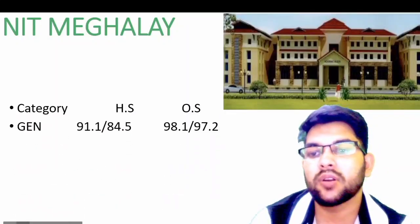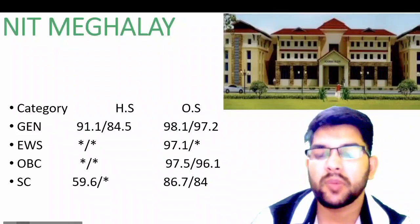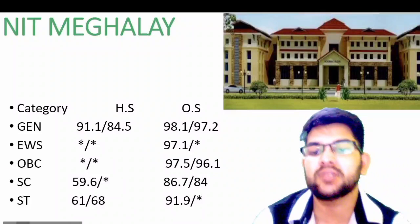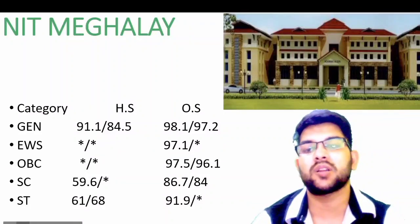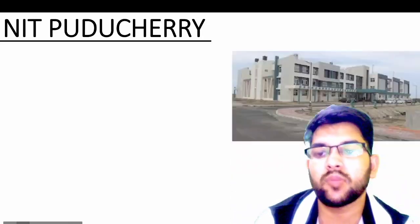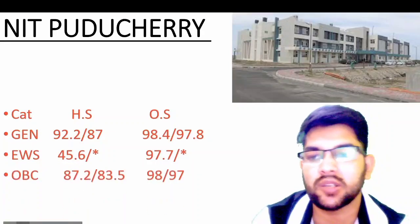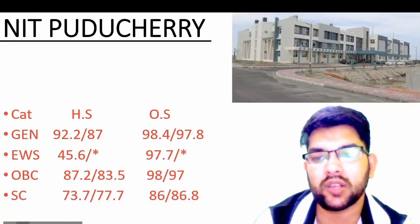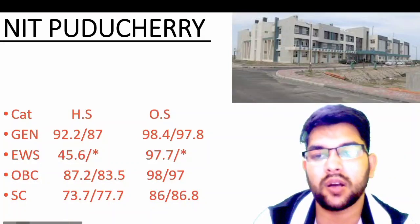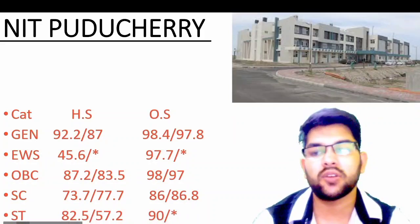Next is NIT Meghalaya. For General: 91.1 and 98.1. EWS: 97.1. OBC: 97.5. SC: 59.6 and 86.7. ST: 91.9 and 61 percentile for home state and other state respectively, male candidates — female cutoffs after the slash. Then NIT Puducherry: General — 92.2 and 98.4; EWS — 45.6 and 97.7; OBC — 87.2 and 98; SC — 73.7 and 86; ST — 82.5 and 90 percentile for home state and other state male candidates.